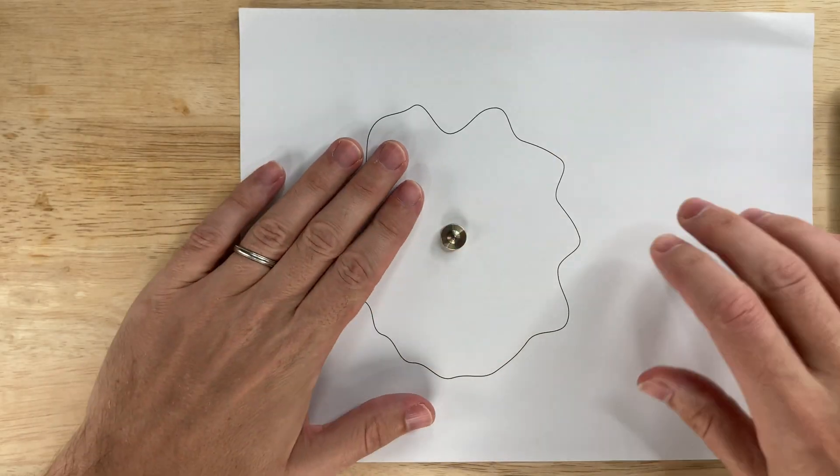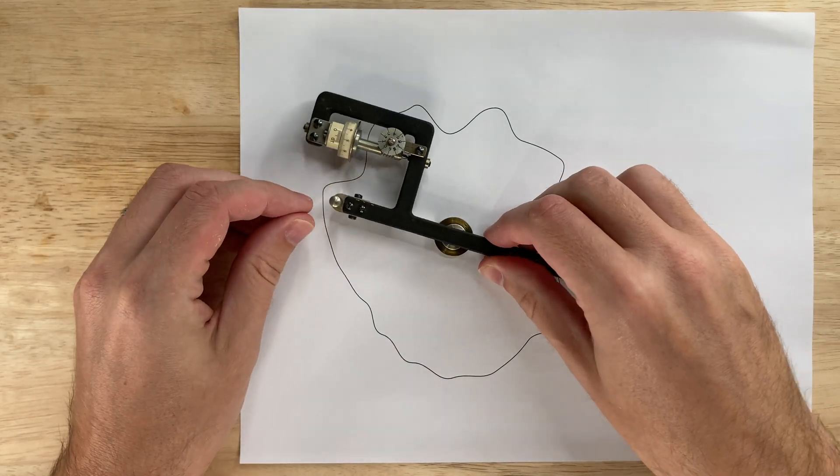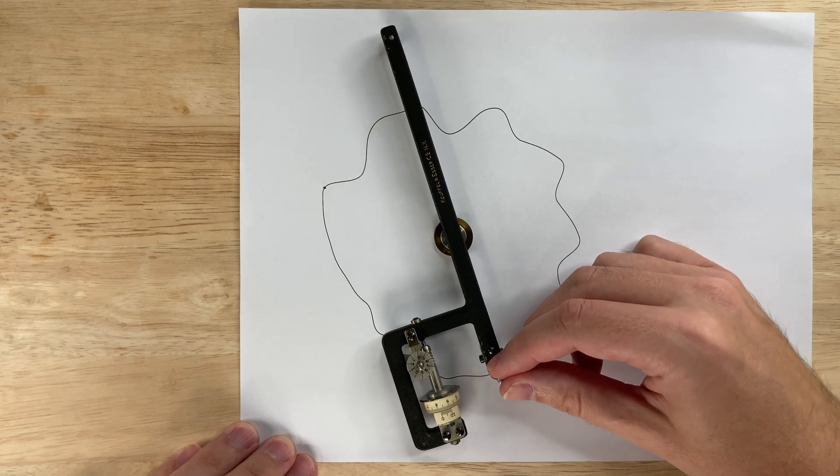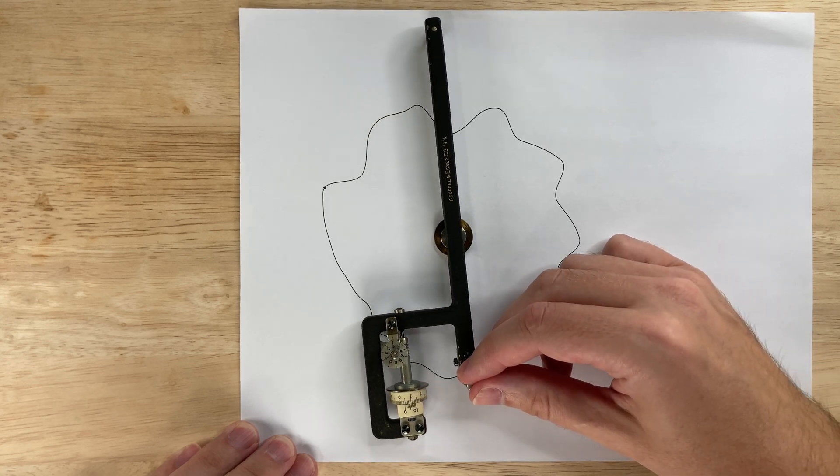You put this contraption in the center of a round shape. Trace around the outline with the little pointer part. And it measures the average radius of your shape.